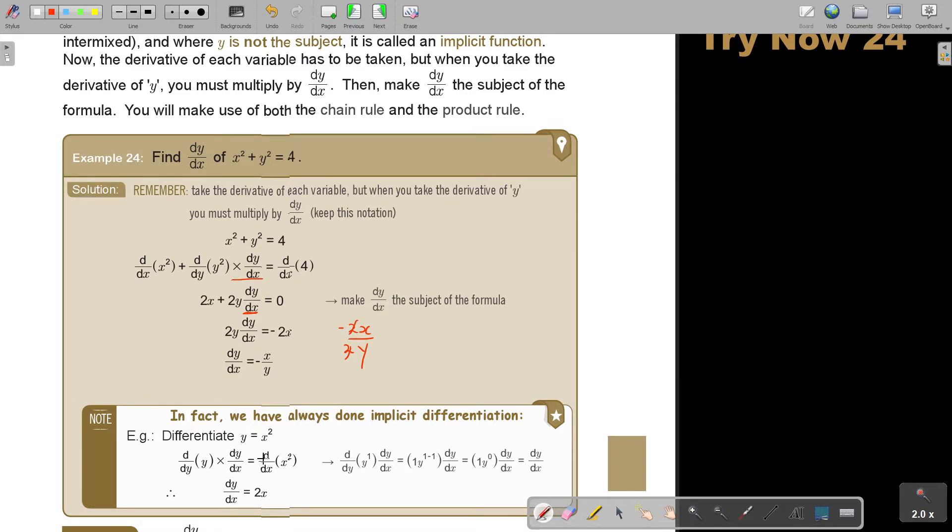Now, this is just very interesting. In fact, we've always done implicit differentiation. Because if you have a function like this, so as soon as you see y, you say d over dy y. And as soon as you take d over dy, you multiply with dy over dx. And there is the x term. So it's d over dx. And this is x squared. And then if you simplify, remember, this is just 1. So this will become 1 multiply dy over dx. And this is 2x. So I said dy over dx, like I did previously, was 2x. And that's exactly what I got there.